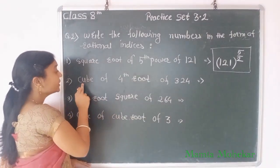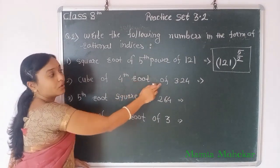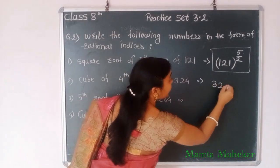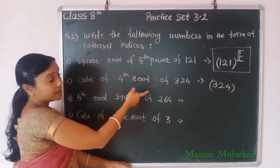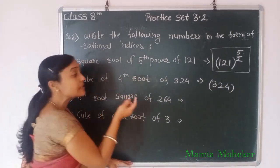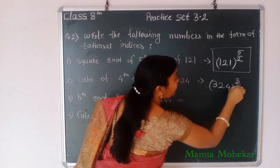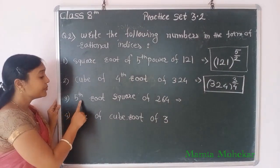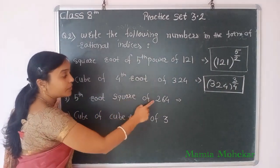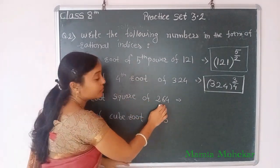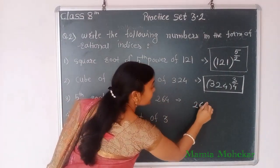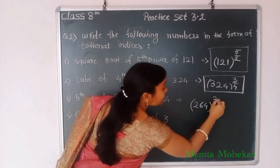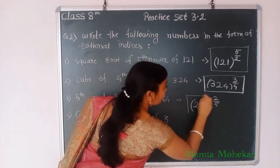Next: cube of 4th root of 324. You first write the number 324 to the power — root is in the denominator and cube means 3 in the numerator — so: 324 to the power 3 by 4. This is our answer. Third example: 5th root of square of 264. Write 264 to the power — 5th root goes in the denominator, square means 2 in the numerator — so: 264 to the power 2 by 5. This is our answer.